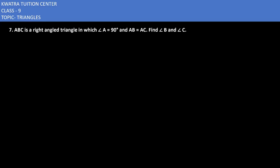Let's start with the 7th question. It says ABC is a right angle triangle in which angle A is 90°, AB is equal to AC, find angle B and angle C.